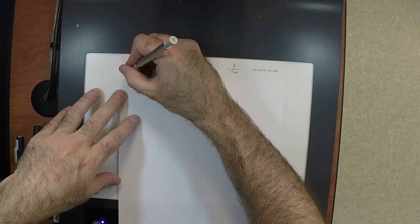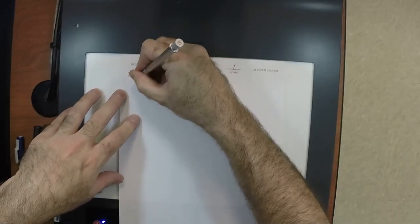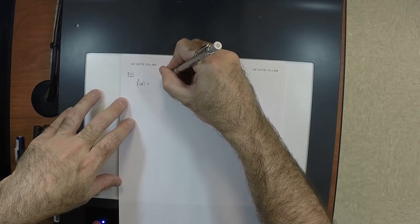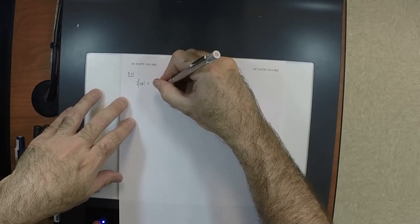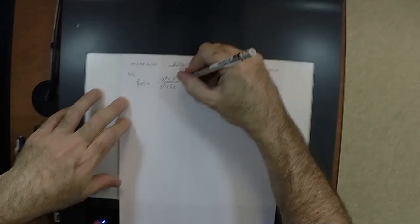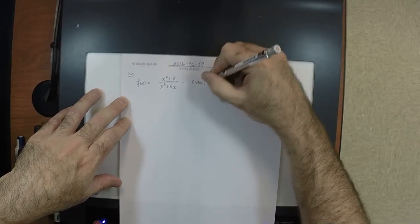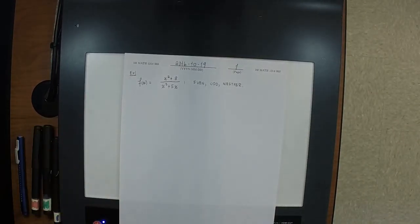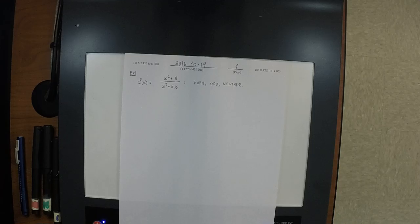Okay, so let's have an example of doing them computationally. For example, f of x is x squared plus 8 divided by x cubed plus 5x. My question to you is, please determine if this is even, odd, or neither. And I want you to do it computationally. It is not even. And it is not neither. So then, by process of elimination, apparently it's odd. But why is that?